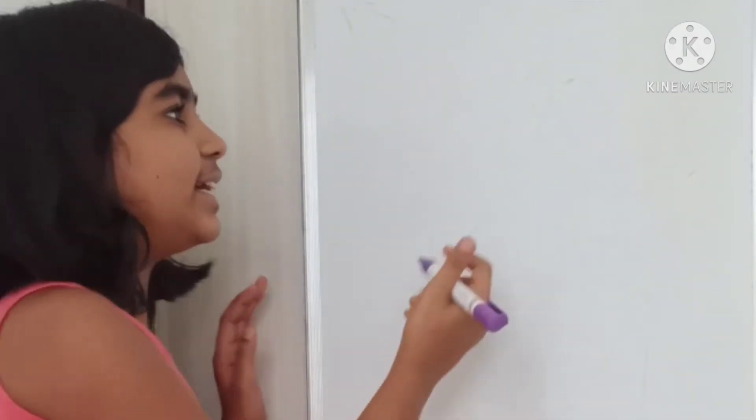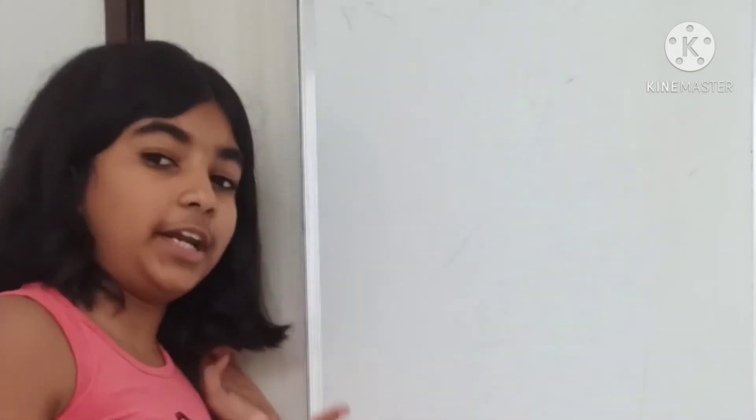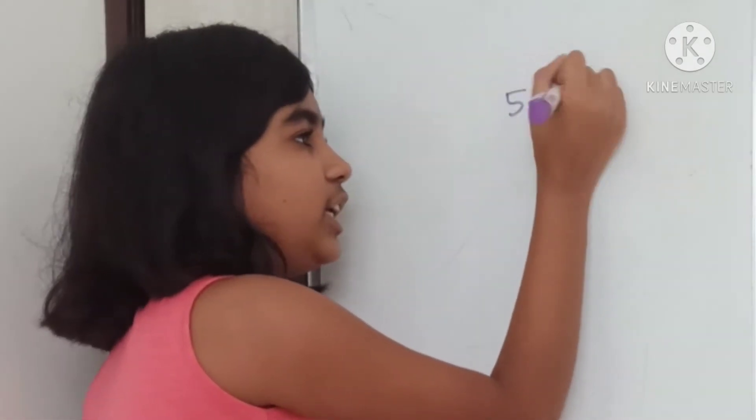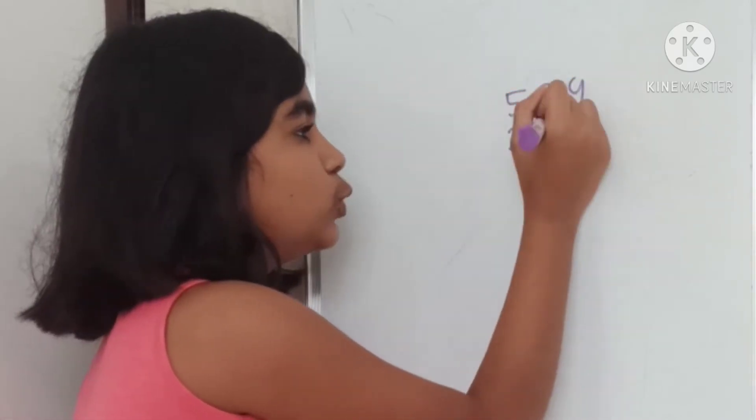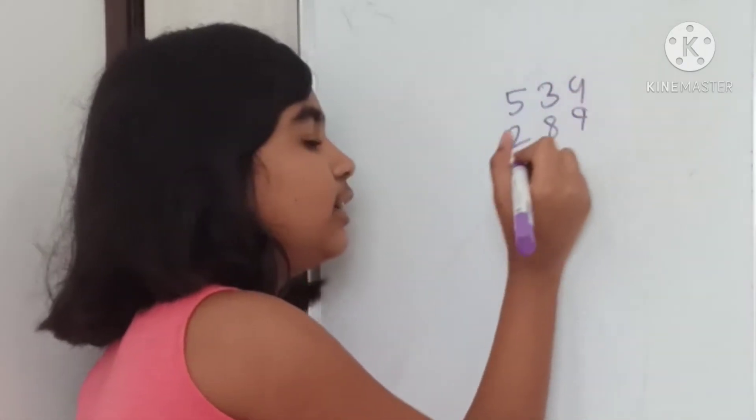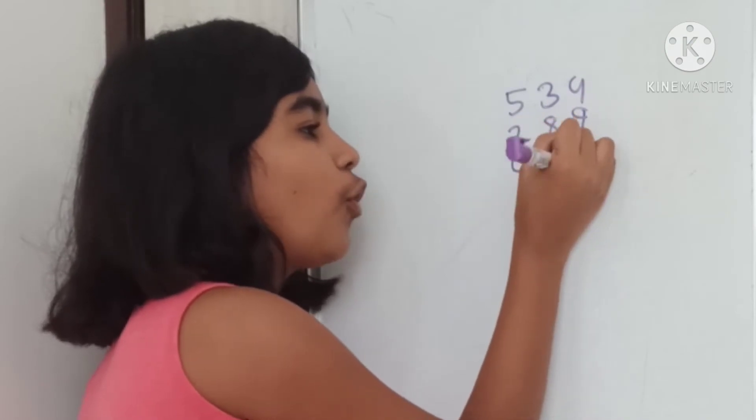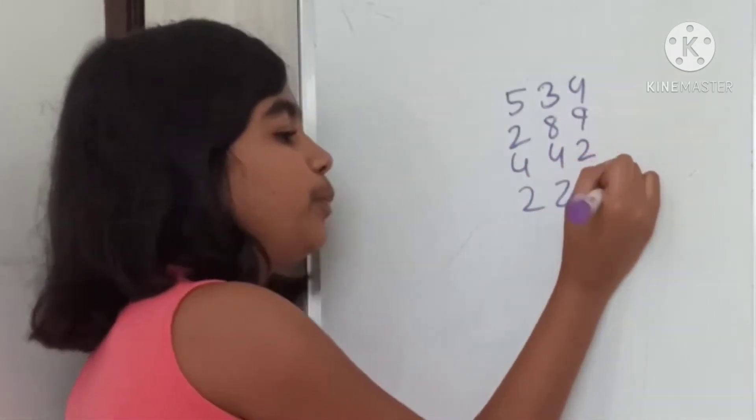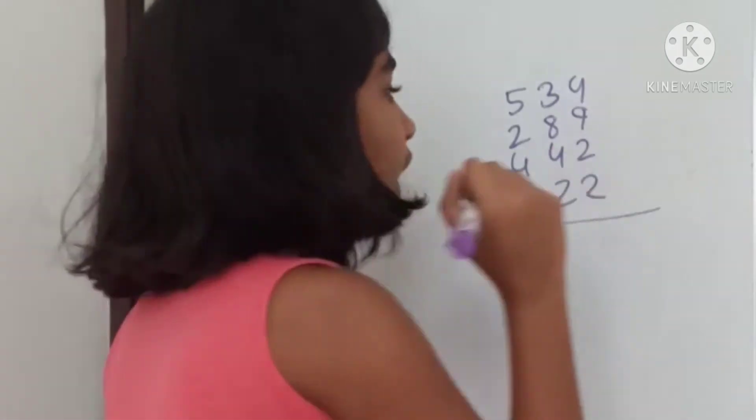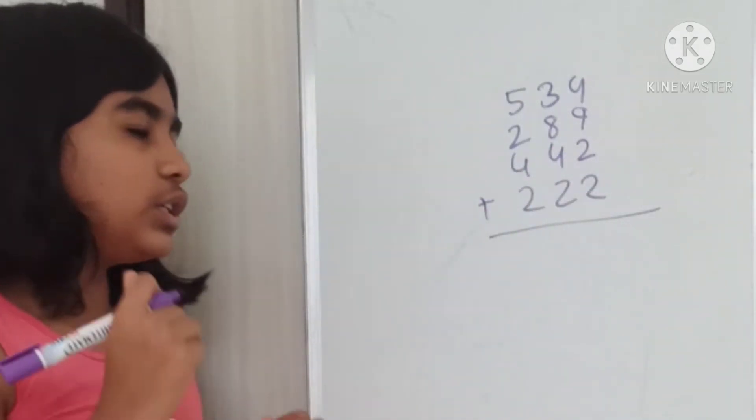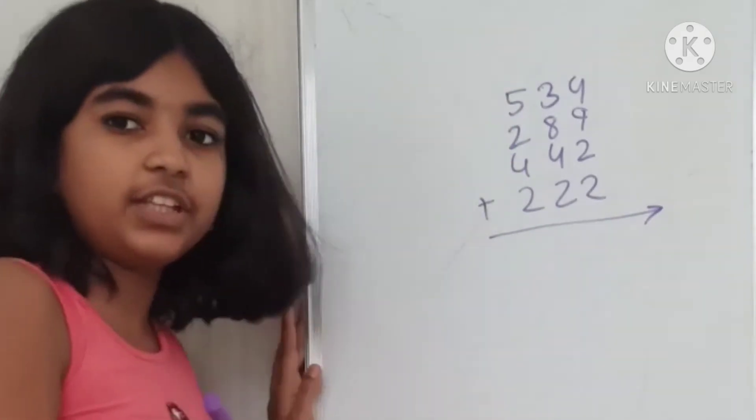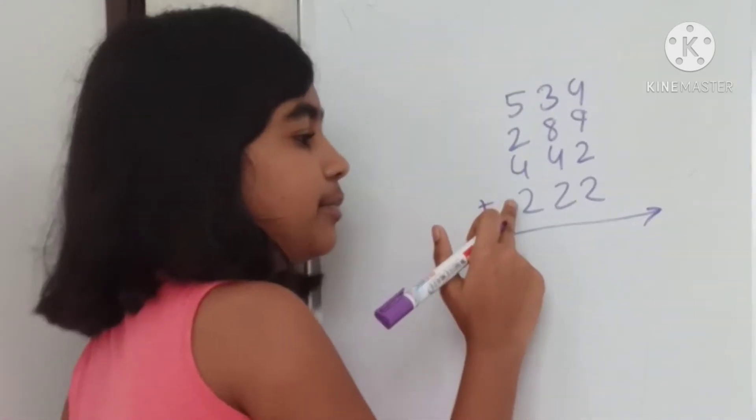Now, let us take another example. Let us take some greater numbers. Let us take 534 plus 289 plus 442 plus 222 to add this.